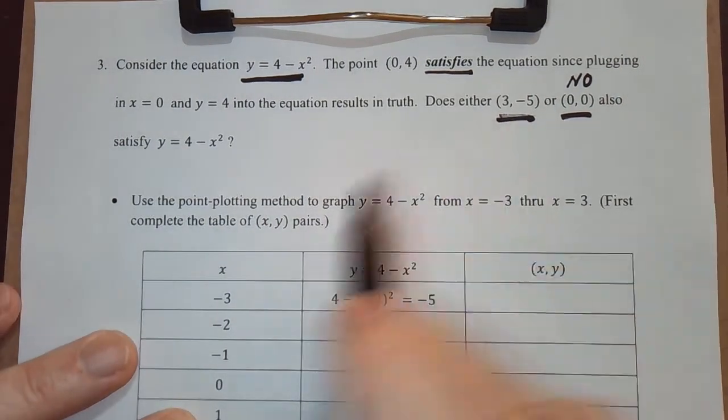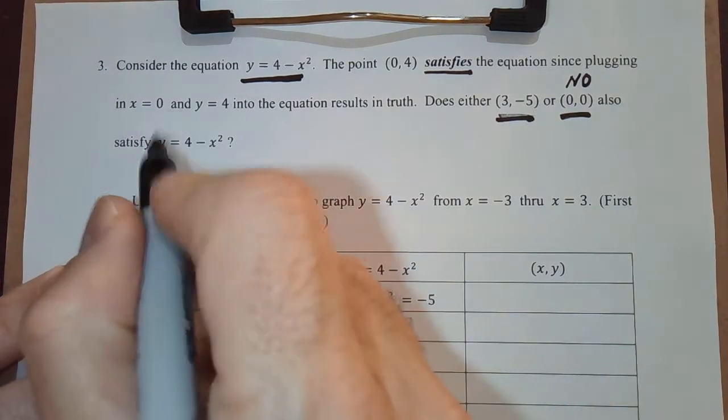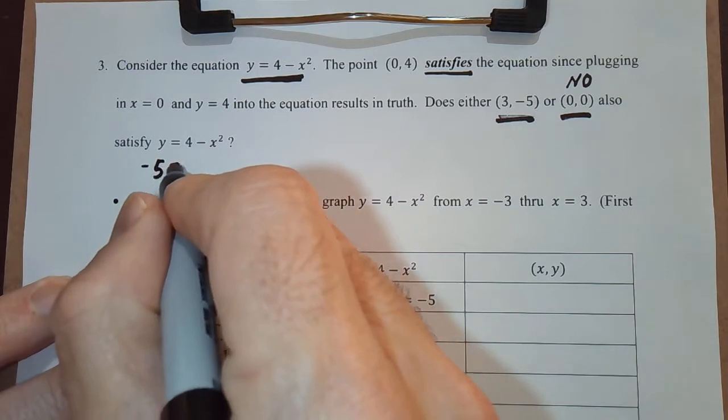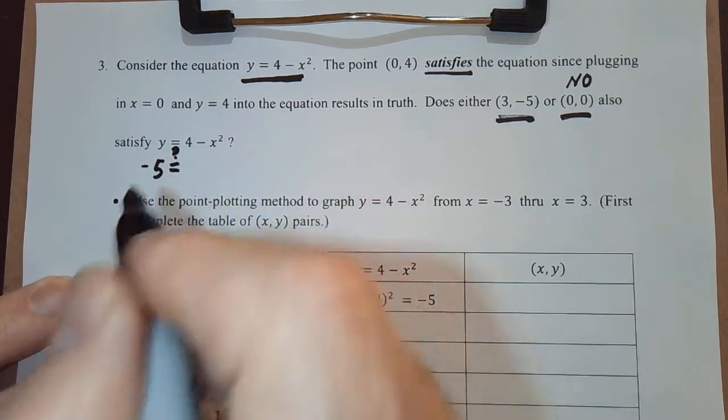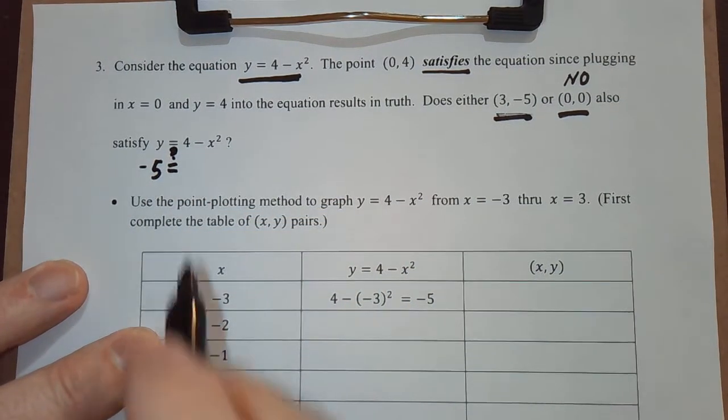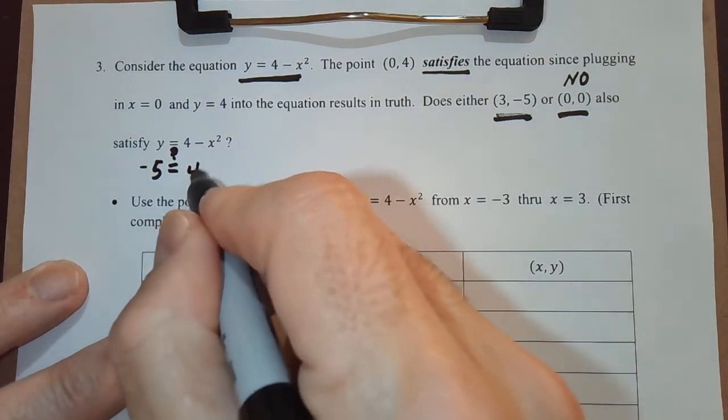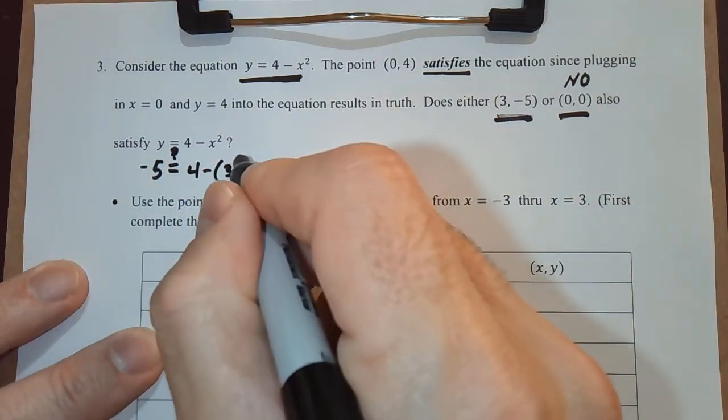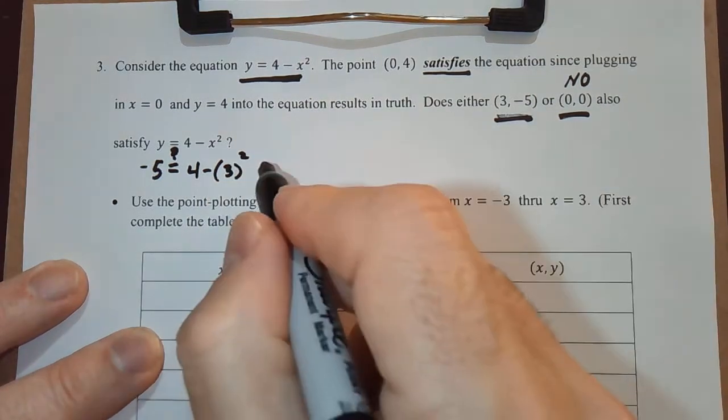Let's look at 3 comma negative 5. If y is negative 5, is that equal, I'm going to put a question mark above the equal sign, is negative 5 equal to 4 minus, x is 3, squared.